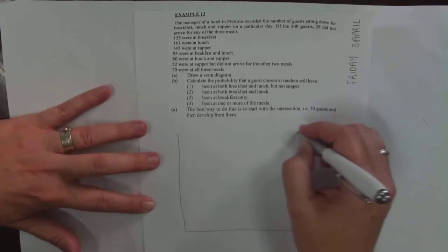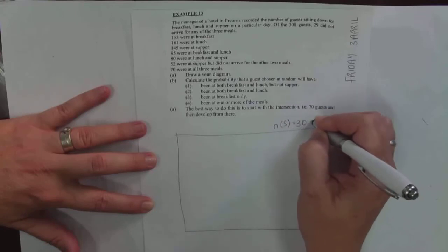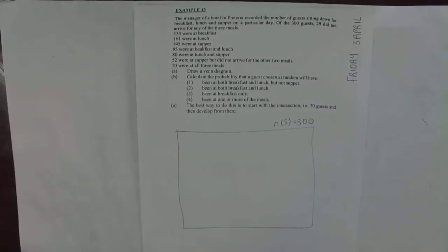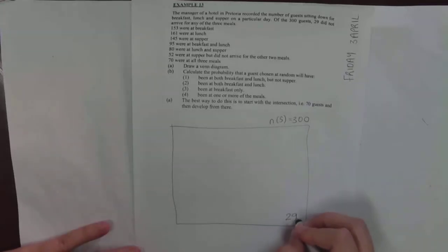So the manager of a hotel in Victoria recorded the number of guests sitting down for breakfast, lunch, and supper on a particular day. Of the 300 guests, that is my sample space. So if I had to draw, and I'm drawing this bigger because I have three events, my total number of guests is 300. 29 did not arrive for any of the three meals.